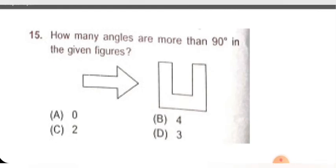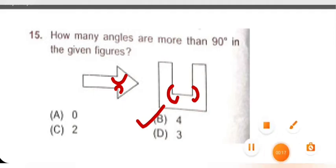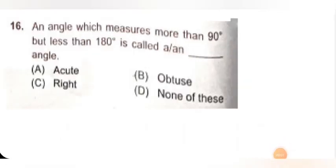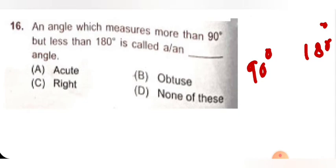Next question: how many angles are more than 90 degree in the given figure? Counting: 1, 2, 3, and 4 — means 4 angles are more than 90 degree. Option B is correct. Next question, number 16: an angle which measures more than 90 degree but less than 180 degree is called — options are acute angle, obtuse angle, right, or none of these. This is obtuse angle. If our angle is greater than 90 degree and less than 180 degree, that is obtuse angle. Option B is the right option.